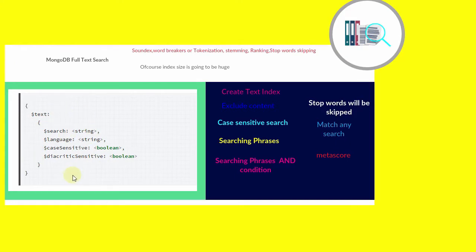In MongoDB, doing a text search is very easy and the syntax is very clear. The first term is the search string; all other three parameters are optional: the language specification — currently MongoDB supports only 15 languages — whether the search is case sensitive or not, and finally whether you want to do a diacritic search. The only prerequisite is that we have to create a text index on the field we are going to search.